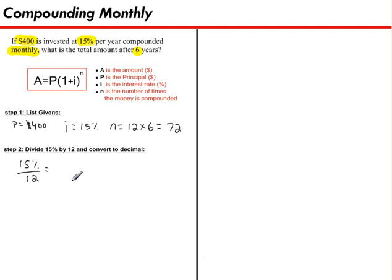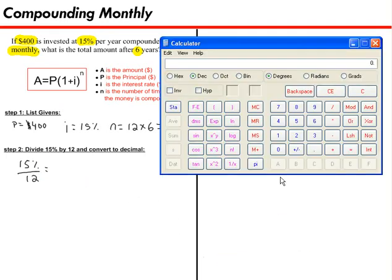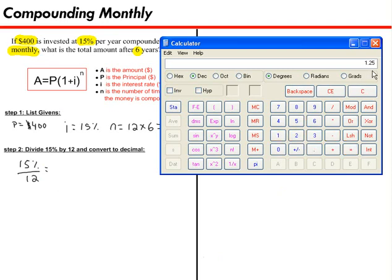And to solve that, I'm going to go ahead and bring in my calculator. 15 divided by 12 is equal to 1.25. So per month, our money grows at a rate of 1.25%.